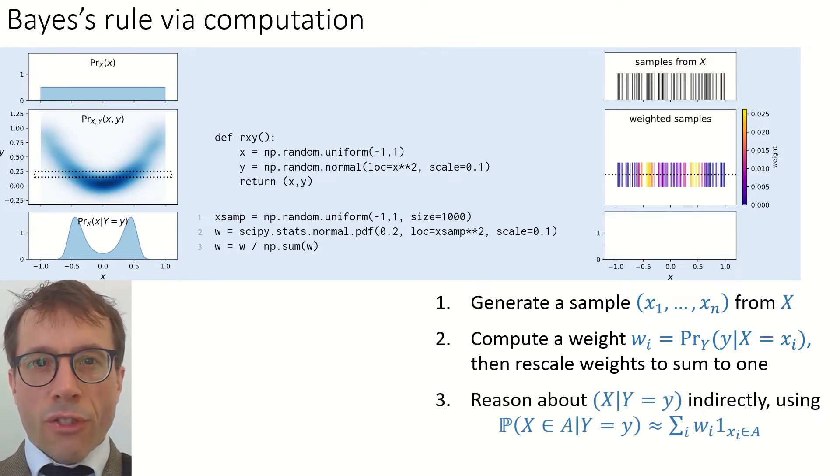Now, we have sampled x values, and each xi has an associated weight wi, and the rule for approximating conditional probabilities is simply this. The probability that x lies in some set a, conditional on the observed value y, is the sum over the sample points xi that fall in set a, the sum of the corresponding weights wi, here written with indicator notation.